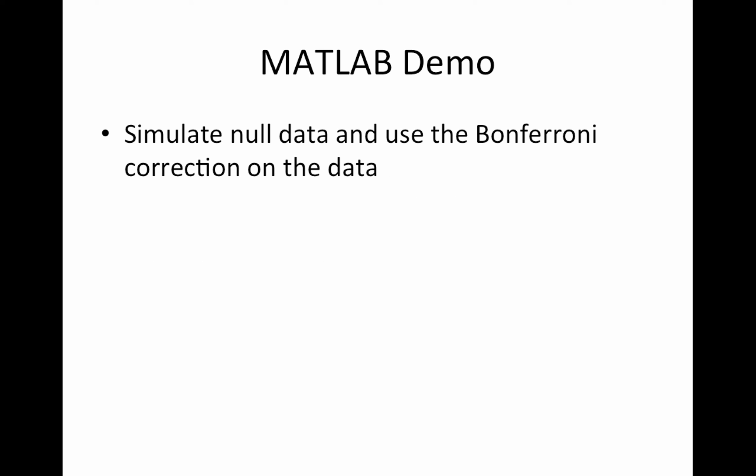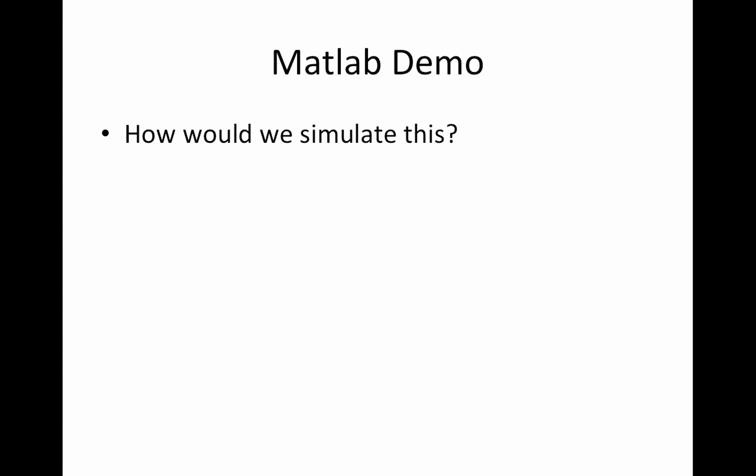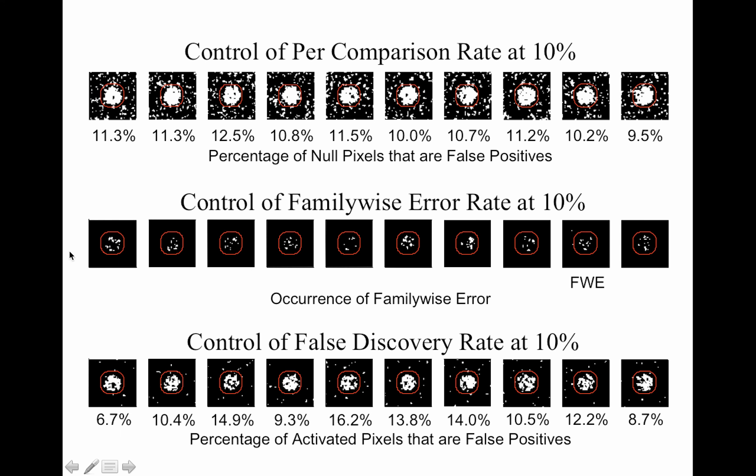So we're going to do a MATLAB demo. I'm going to simulate null data and use the Bonferroni correction. This simulation is slightly different than before because we're focusing on family-wise error rate. Remember, family-wise error rate is controlling any false positives. In order to compute family-wise error rate, I had to simulate multiple studies worth of data. Last time we just simulated a brain of data and tried to look at the per-comparison error rate. So now our simulation is going to have an extra loop in it to loop through creating 1,000 data sets, and then we're going to count the probability of any false positives.